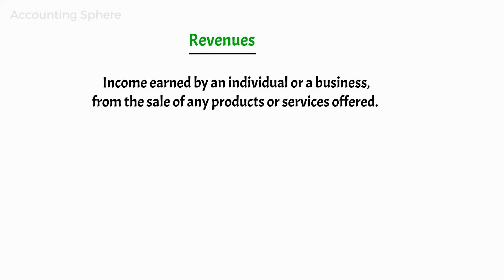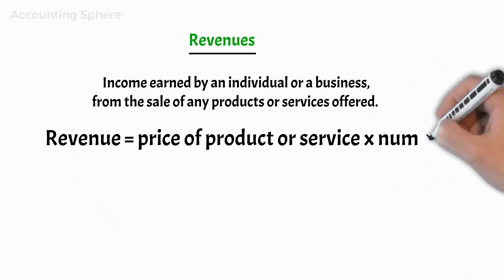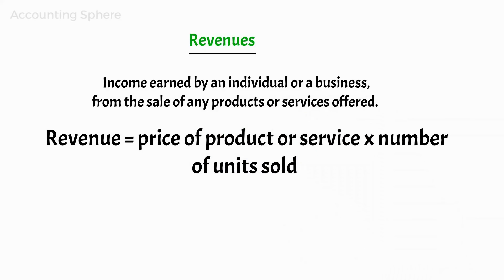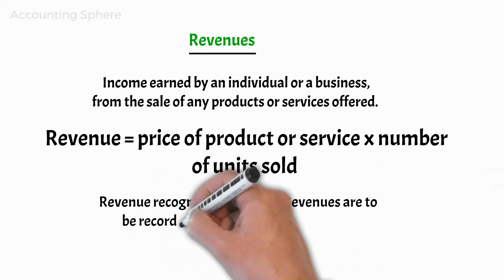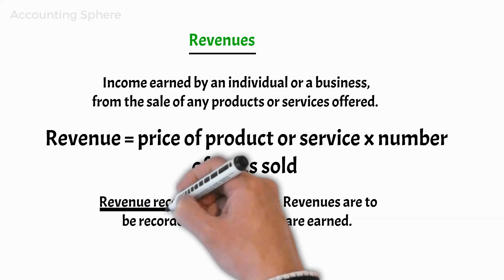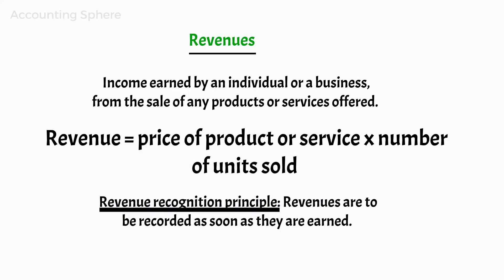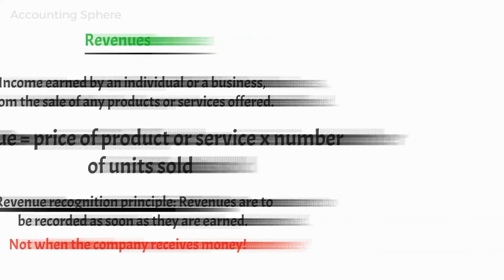Revenue is also known as sales, and we can calculate revenue by multiplying the price of the product or service times the number of units sold. The revenue recognition principle, one of the fundamental accounting concepts, dictates that revenues are to be recorded as soon as they are earned. Following the accrual basis of accounting, as opposed to the less favored cash method of accounting, the revenues are recorded when they are earned — meaning when the act in fact happens, and not when the company receives the money.